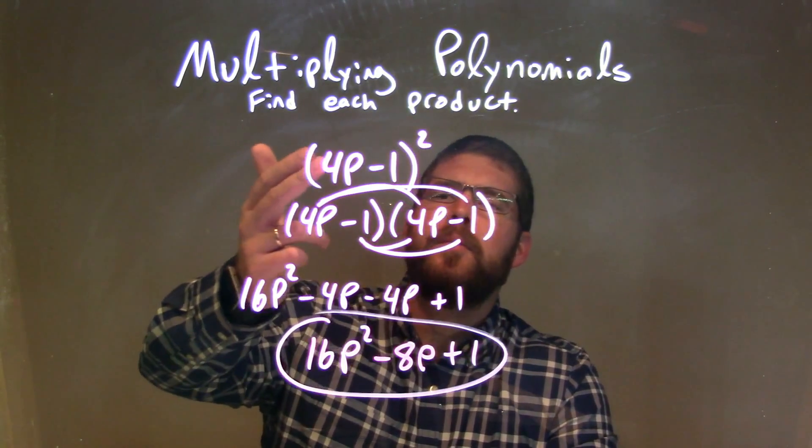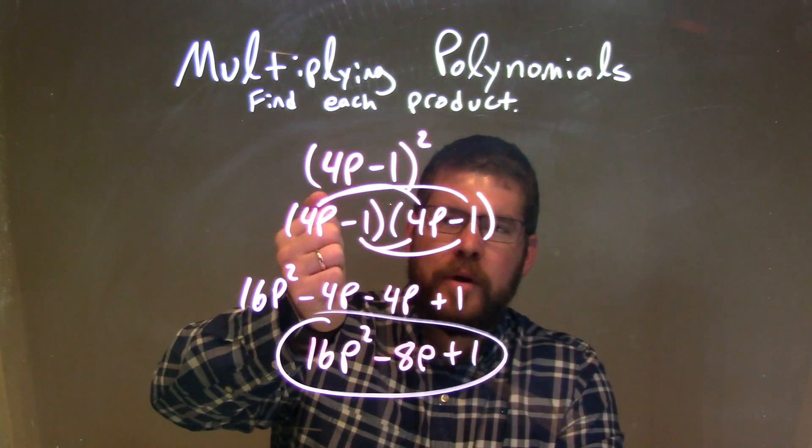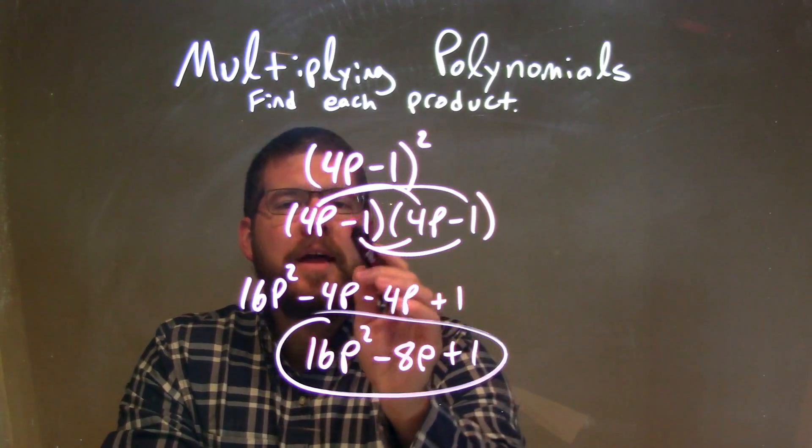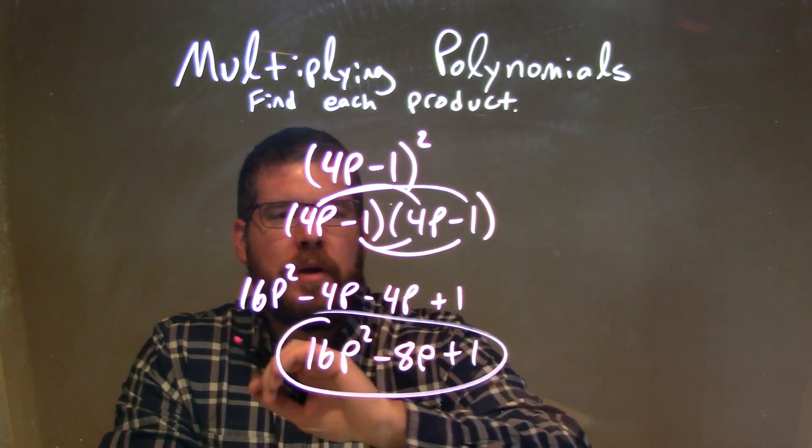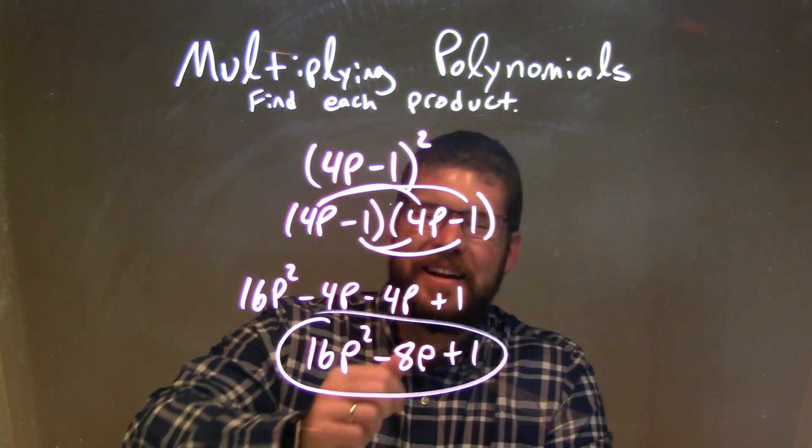Let's recap. We're given (4p - 1) all squared. I know that (4p - 1) squared is the same thing as (4p - 1) times (4p - 1). I then multiplied all parts of my first parenthesis by all parts of my second parenthesis, and I drew my arcs to show that.